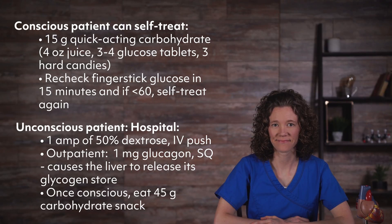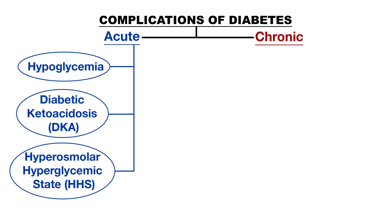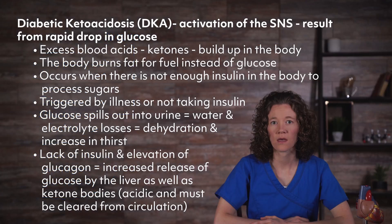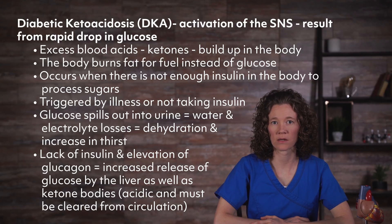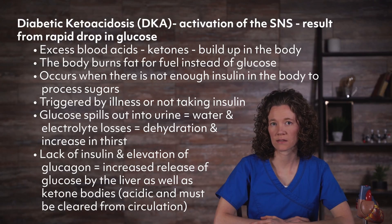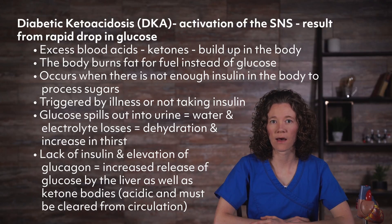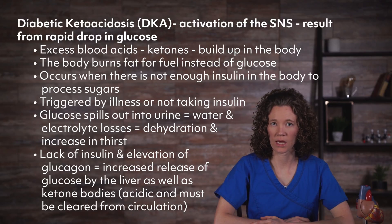Diabetic ketoacidosis, or DKA, is another serious acute complication. When excess blood acids called ketones build up in the body, ketones are formed when the body burns fat for fuel instead of glucose. This can occur when there is not enough insulin to process sugars. DKA is triggered by illness or not taking insulin. The progressive hyperglycemia causes glucose to spill into the urine, resulting in water and electrolyte losses, causing dehydration and increased thirst.